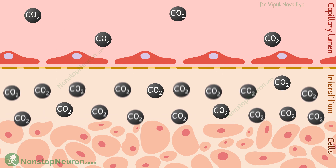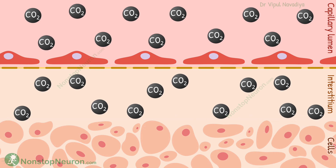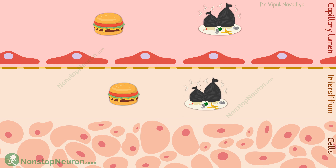Contrary to this, the activities of the cell produce waste products, like carbon dioxide. So the concentration of waste products is high in the interstitium, and the capillary fluid has less waste products. So during mixing up, there is a net movement of waste products from interstitium to capillary.